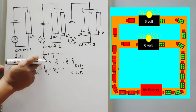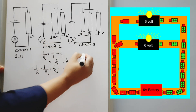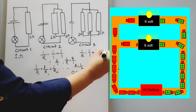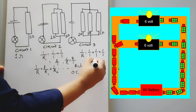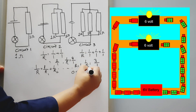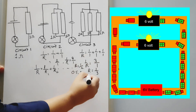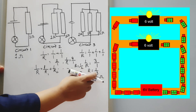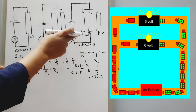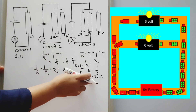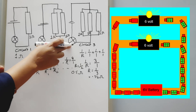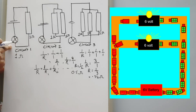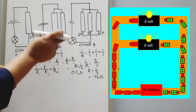For circuit three, using the same formula: 1/R = 1/1 + 1/1 + 1/1 = 3/1, so R = 1/3 ≈ 0.33 ohm. The total resistance of circuit three is the least at 0.33 ohm, so the bulb in circuit three glows the brightest compared to the bulbs in circuits two and one.